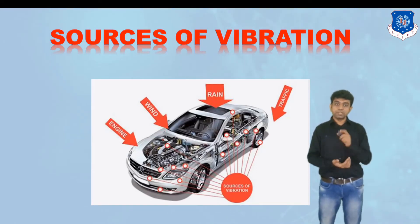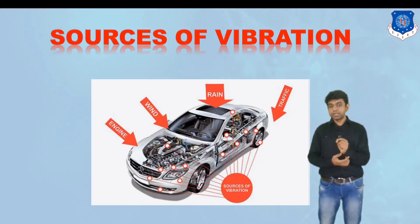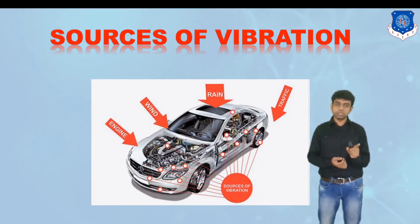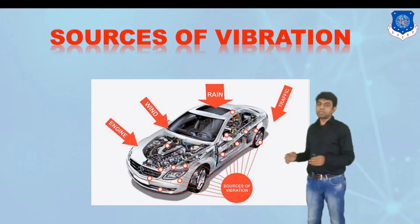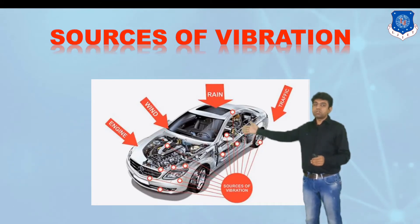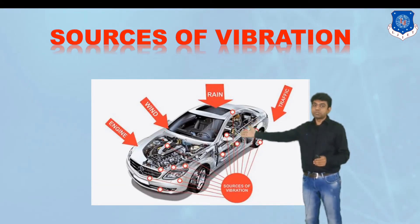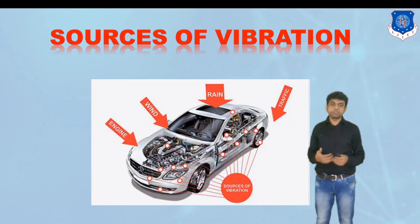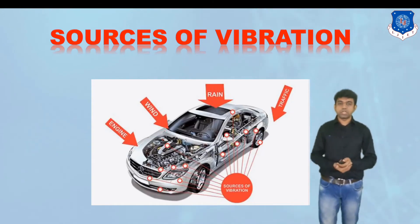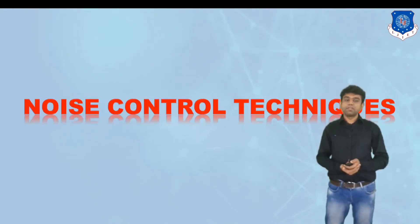Now let us understand the sources of vibration. Before that, it is important to note that noise and vibration are two faces of a single coin — if noise is there, vibration will always be there, and if vibration is there, noise is likely present. So the sources remain common. Vibration sources include the engine, wind, rain, traffic, and exhaust gas.